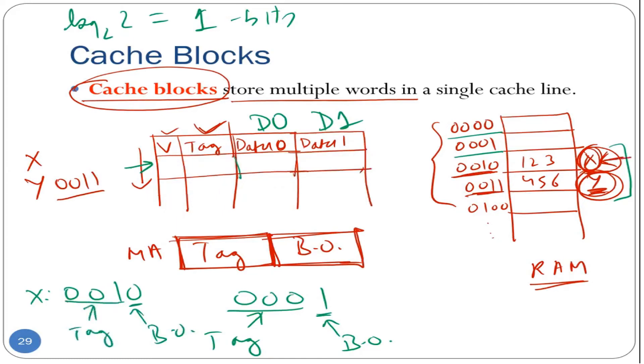So when there is a request for this data item X, we'll find an empty row. Let's say this first row is empty. We will set this valid bit to one. And then in the tag field, we will only store the tag portion of the memory address for X, which is 001. So 001 will be stored. The entire address will not be stored.